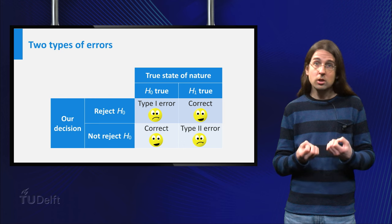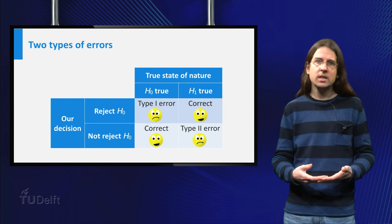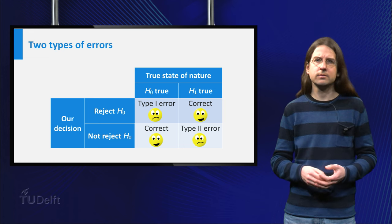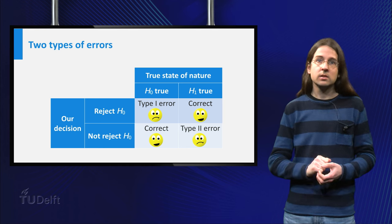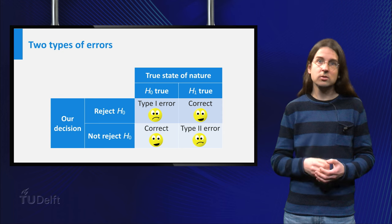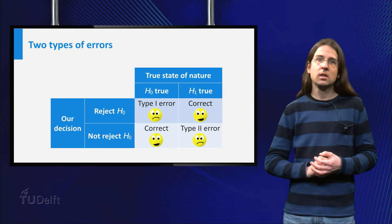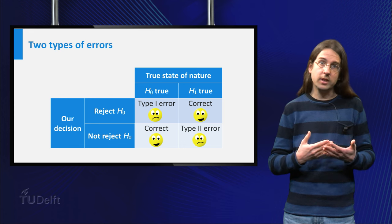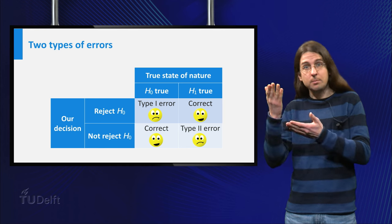The goal of a rule determining whether or not to reject H0 is to minimize these two types of errors. But there is a trade-off. Recall that X is the cutoff, the number of warm months needed to reject H0. If we choose a low value for X, we reject H0 more often, so the chance of an error of type 2 goes down, but the chance of an error of type 1 goes up.